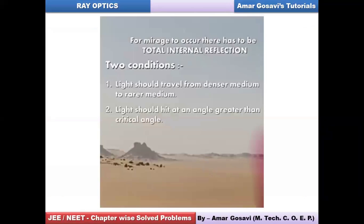The two important conditions for a mirage to occur are the same as those for total internal reflection: one, the light must travel from denser medium to rarer medium; two, light must hit at an angle greater than the critical angle.